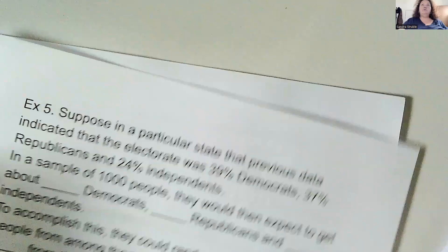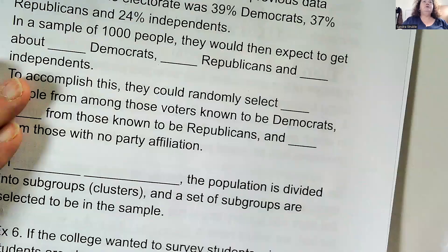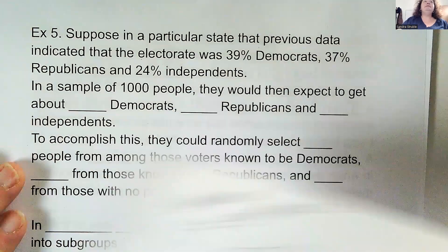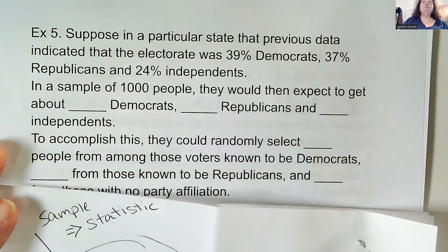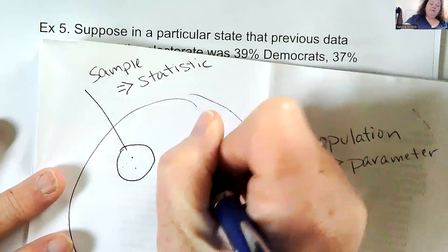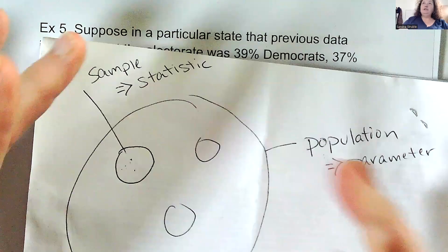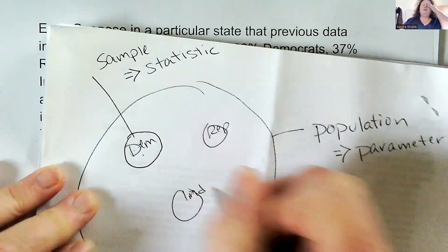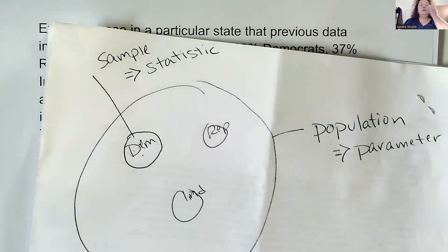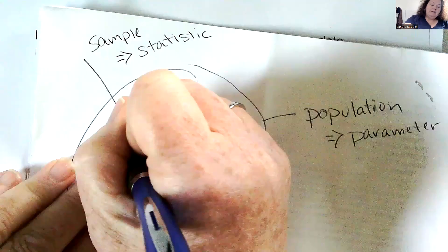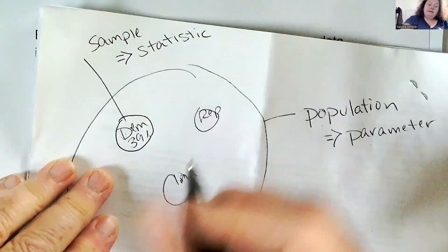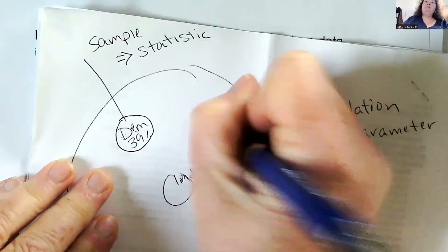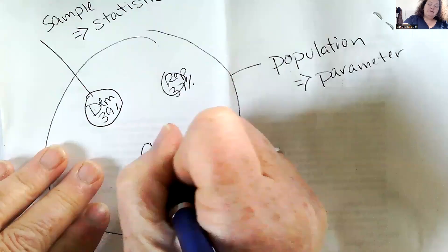Our example will give us a good representation of what stratified sampling means. Suppose in a particular state that previous data indicated that the electorate was 39% Democrats, 37% Republican, and 24% independent. So this is the entire population, and now we've got Democrats, Republicans, and independents being represented. Democrats make up 39% of the population, Republicans make up 37%, and independents make up 24%.